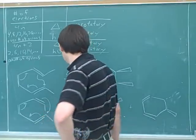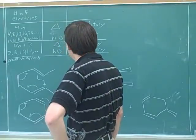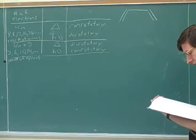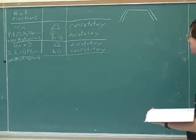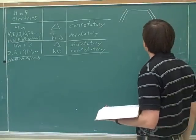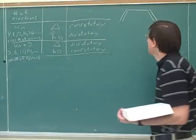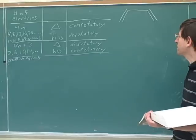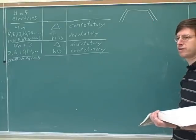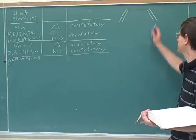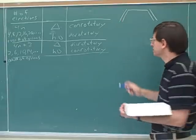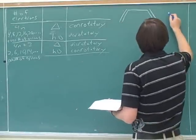We know this is something that can do an electrocyclic ring closure. How many pi molecular orbitals will this compound have? Four, because it has four overlapping p orbitals.